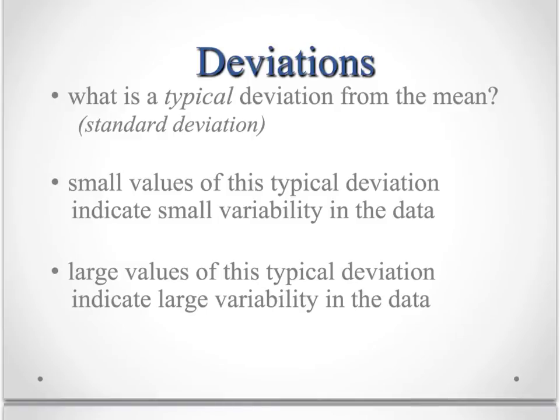But be careful with that idea of small values and large values because that's relative to the data itself. If you're talking about home prices and you're saying you have a mean of $250,000 and a standard deviation of $2,000, that's a small standard deviation.